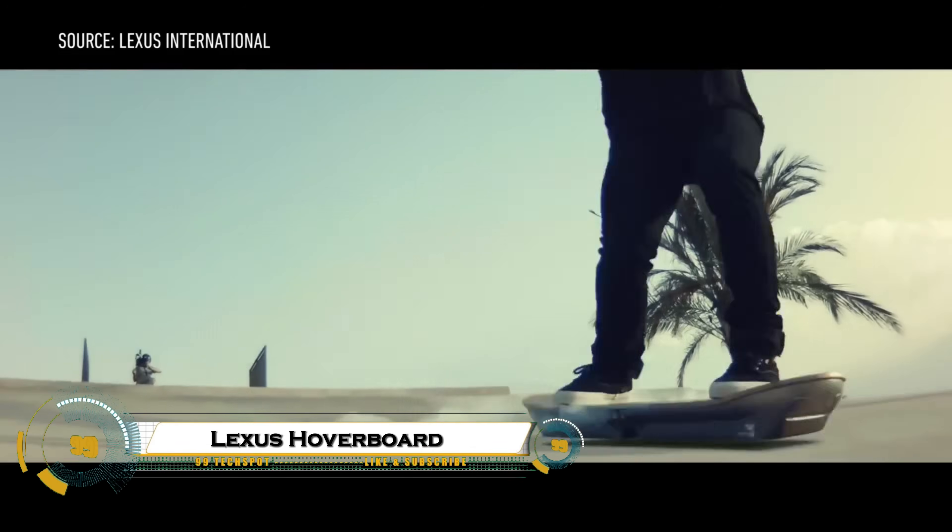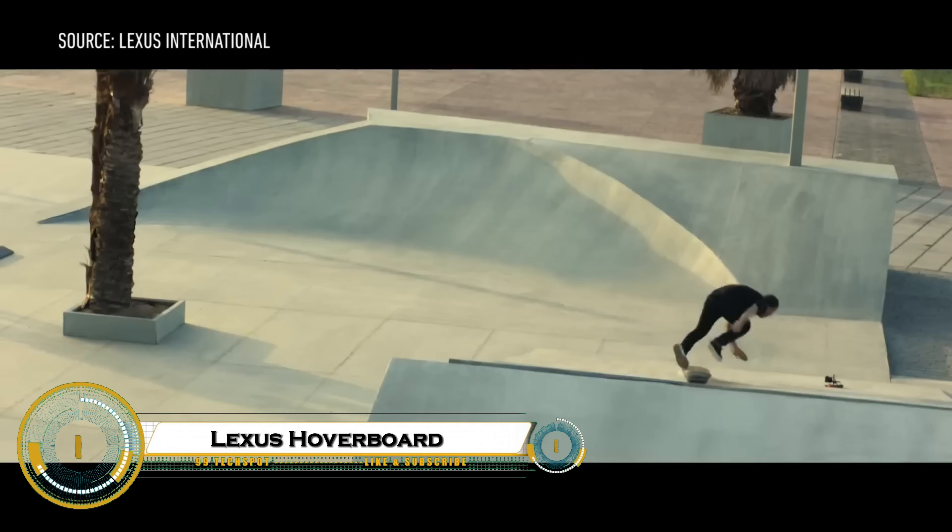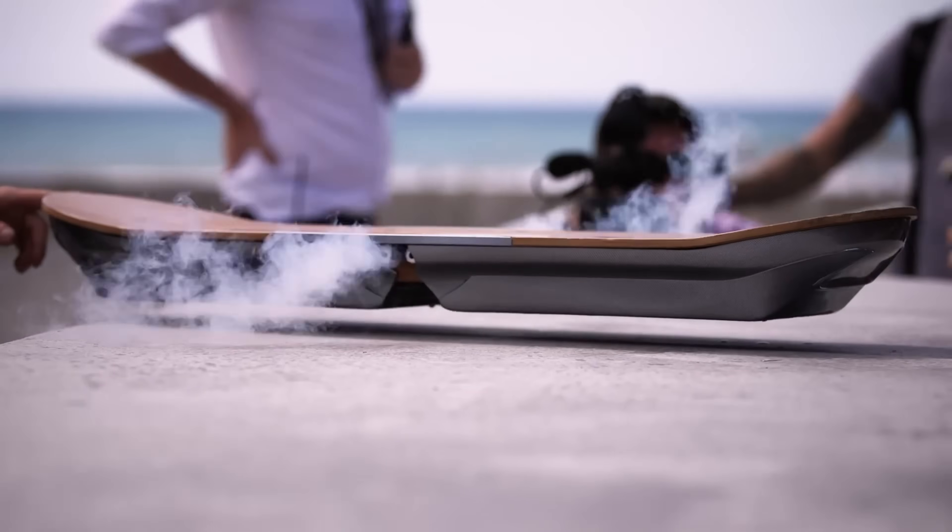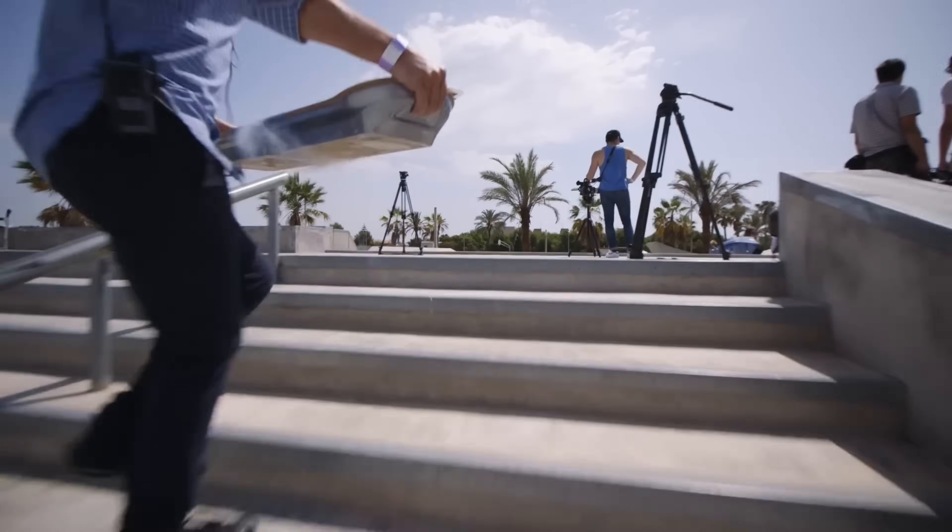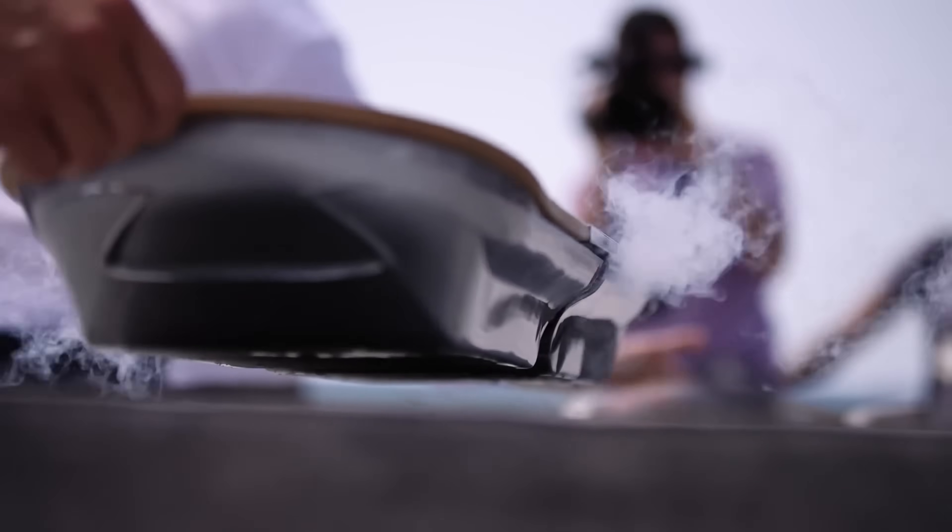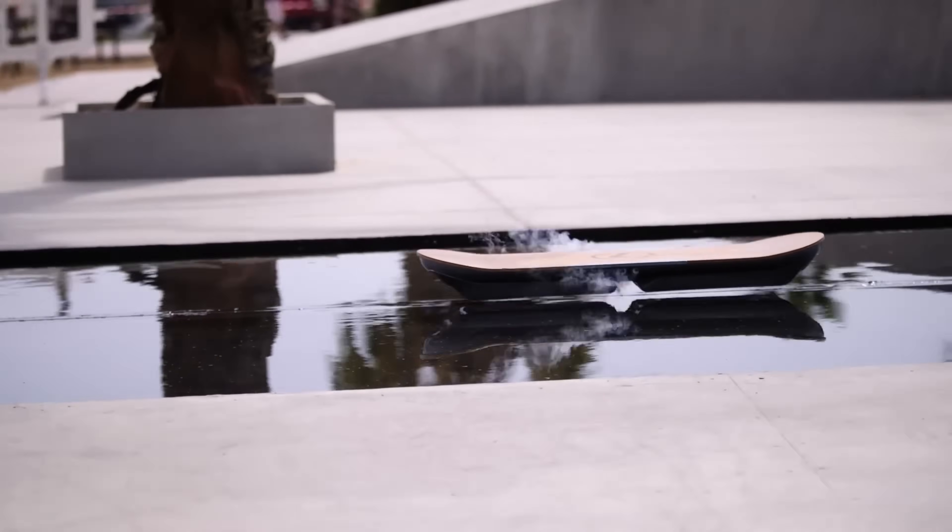The Lexus Slide Hoverboard uses magnetic levitation with high-temperature superconductors, cooled by liquid nitrogen to float above a special magnetic track. This technology, called flux pinning, keeps the board stable and allows riders to hover, glide, and jump with almost no friction.